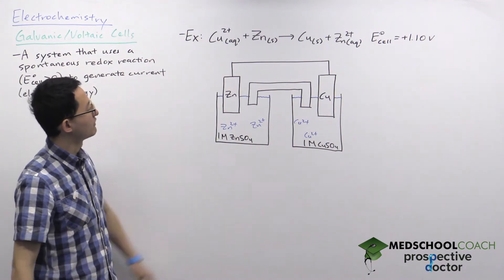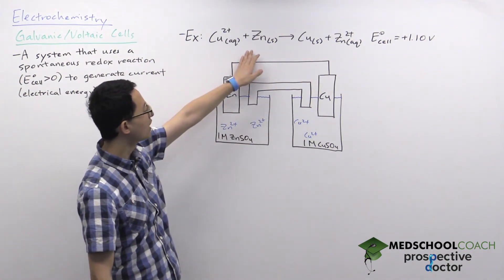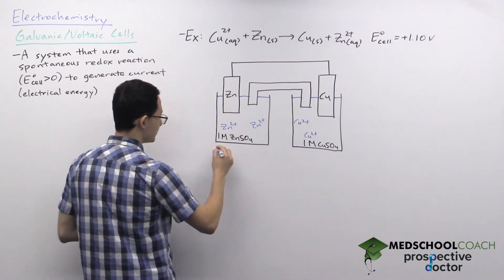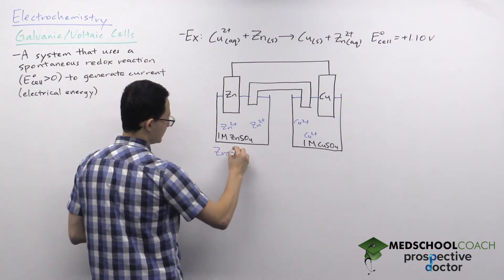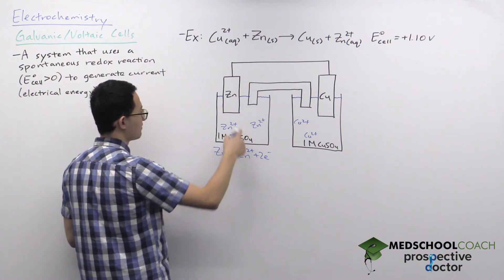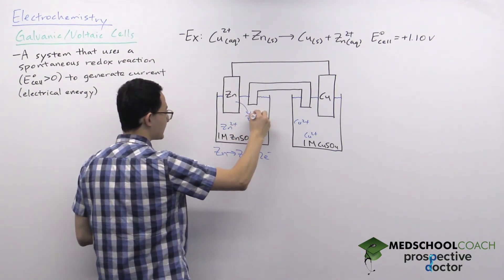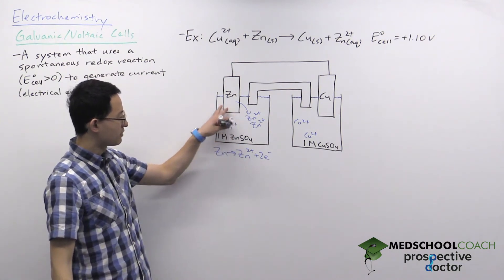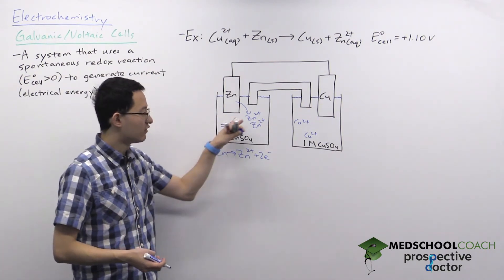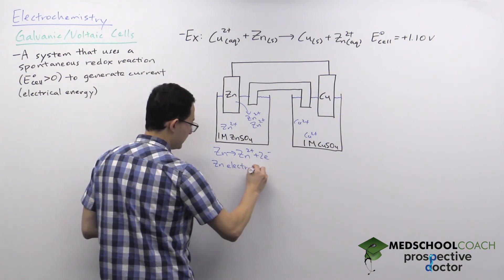Copper is going to get reduced — it gains electrons to form copper solid — and zinc is going to get oxidized to form zinc cations. On the zinc side, the half-reaction is: Zn(s) → Zn²⁺ + 2e⁻. Chemically, the solid zinc metal is being oxidized into zinc cations in solution, so the zinc metal gradually degrades and gets smaller as it dissolves.